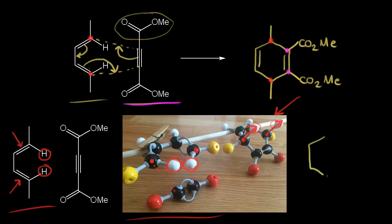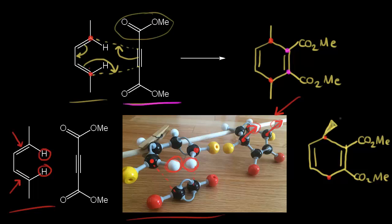Let's go ahead and draw that. We have our ring, and let me put in our double bonds and our esters — CO₂Me and CO₂Me. Let's draw in those hydrogens coming out at us in space. Those two carbons marked in red are these two carbons, so we should have a hydrogen coming out at us on a wedge at both of those carbons. Here's a hydrogen coming out at us on a wedge, and here is another hydrogen coming out at us on a wedge. Next, let's look at the outside substituents.